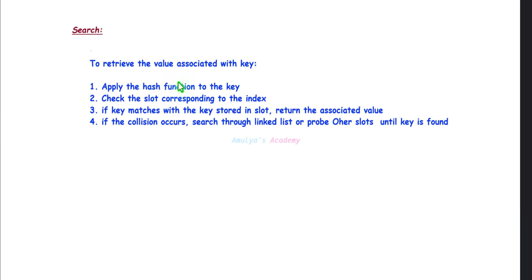To retrieve the value associated with a key, first apply the hash function to the key, find the index, and check that slot. If the key matches the key stored in the slot, return the associated value. If a collision occurs, search through the linked list or probe other slots until the key is found.